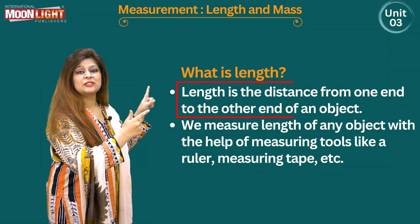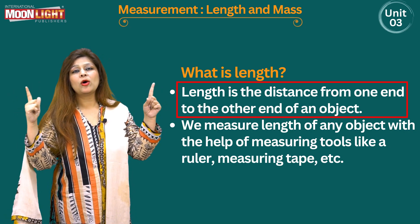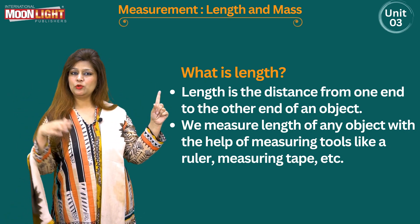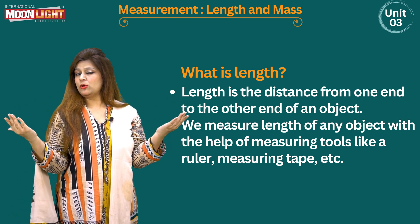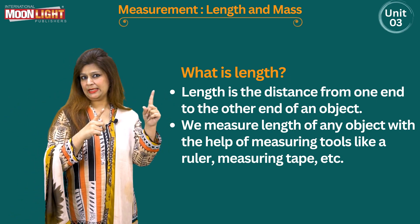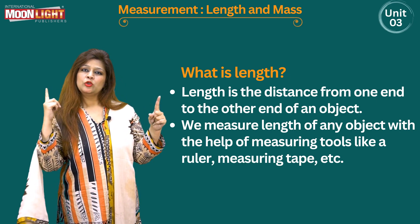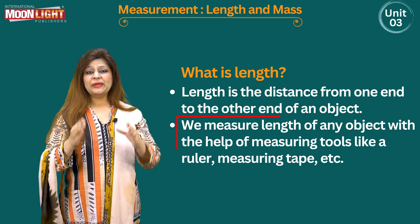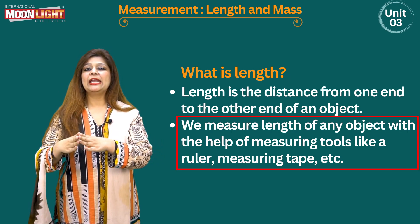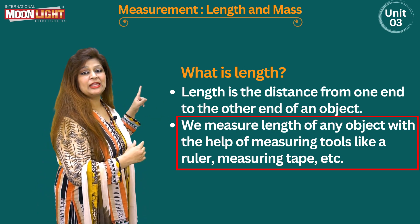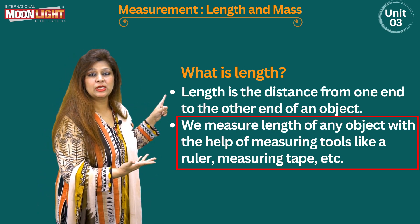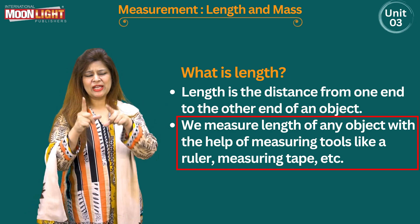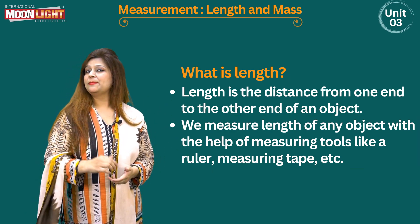Length is the distance from one end to the other end of an object — from one end to another end. Like your book also has a length, from one corner to the other corner. We measure the length of an object with the help of measuring tools like a ruler, measuring tape, etc.